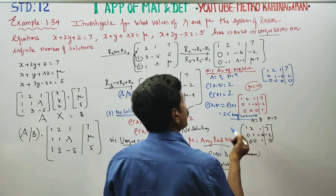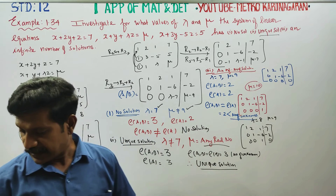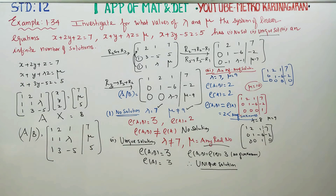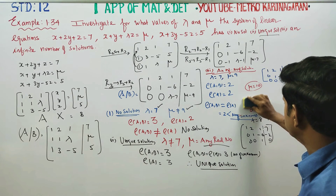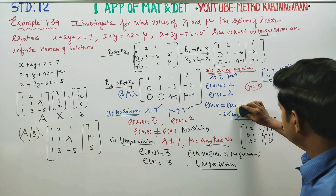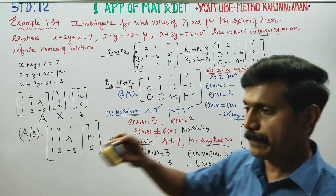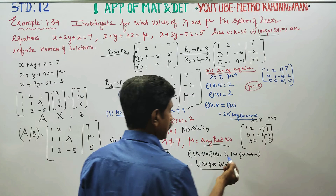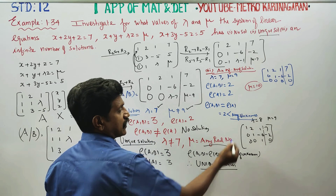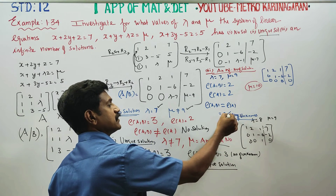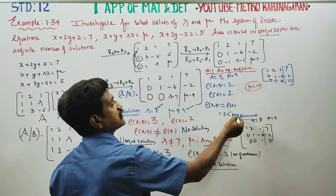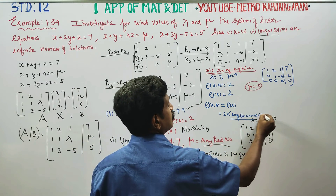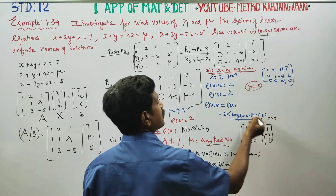Since rank of A equals rank of [A|b] equals 2, which is less than the number of unknowns 3, the system has infinitely many solutions.